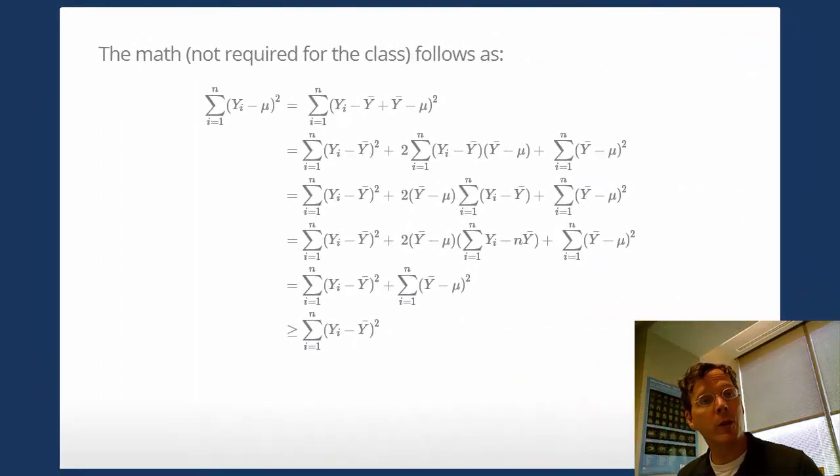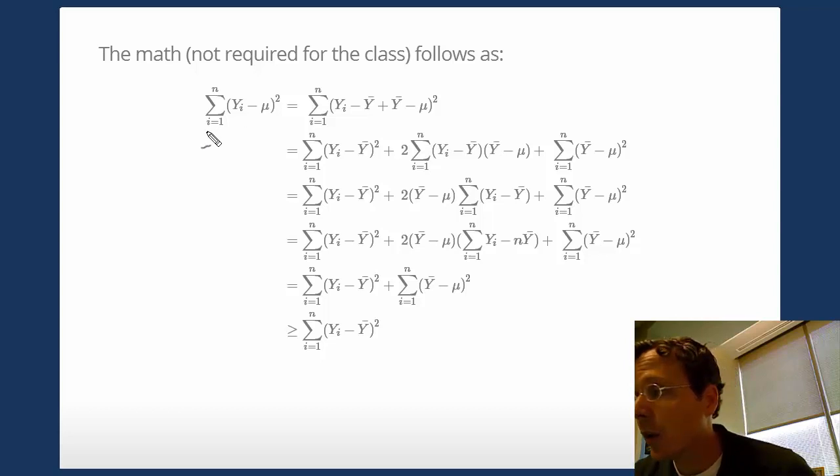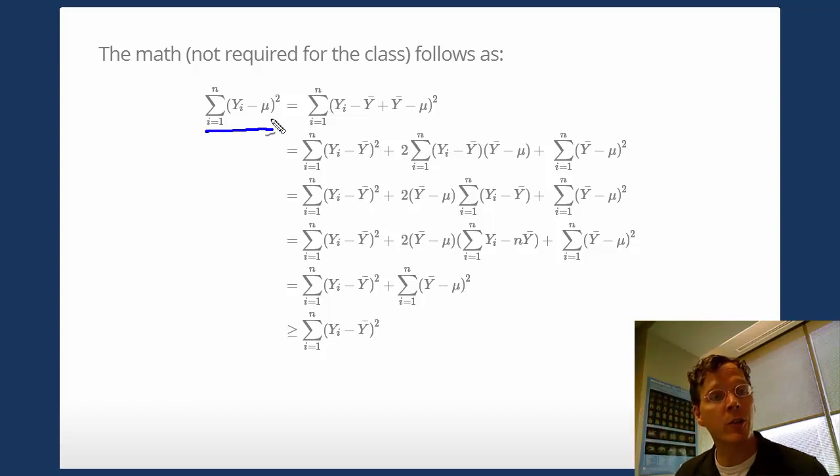Now I'm going to go through the proof that y bar is the minimizer for this equation here as a function of mu.